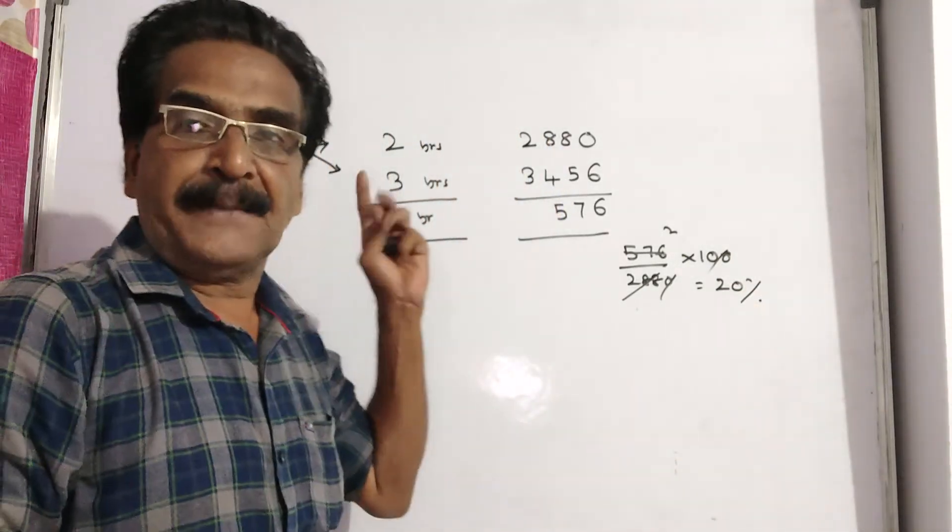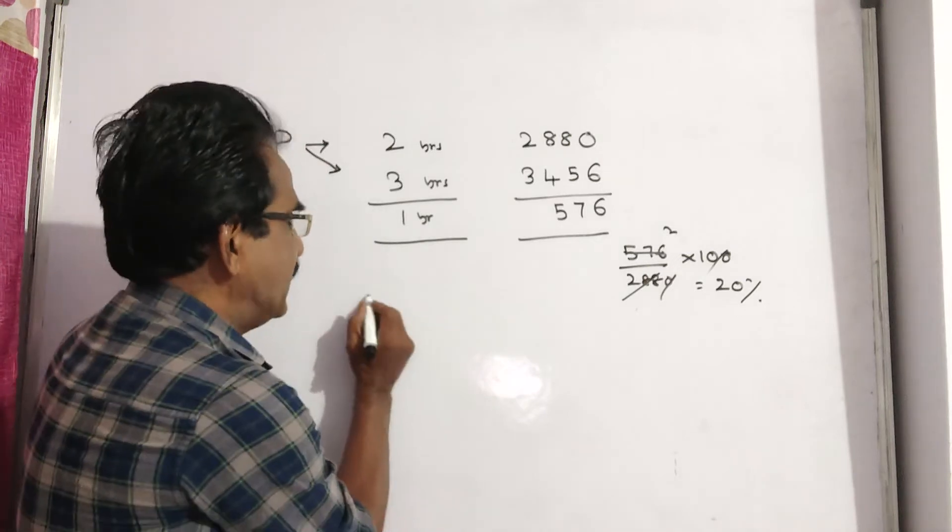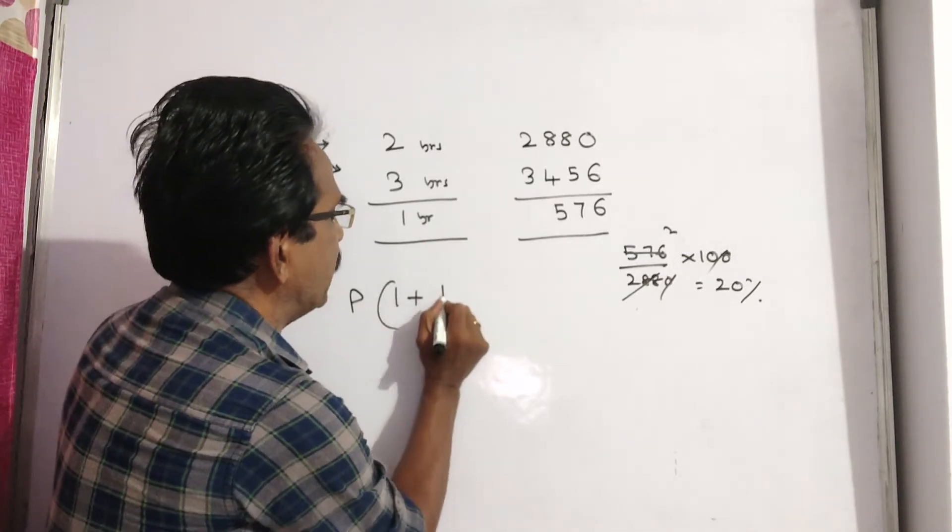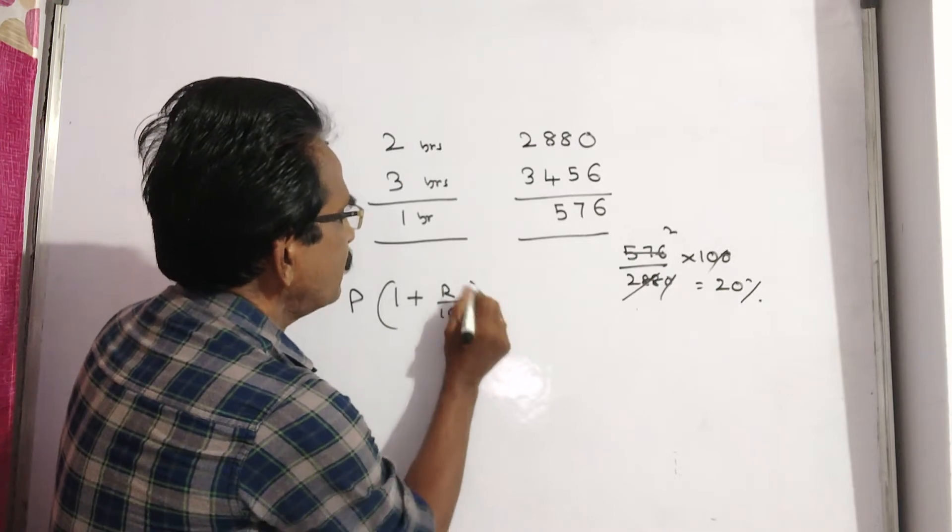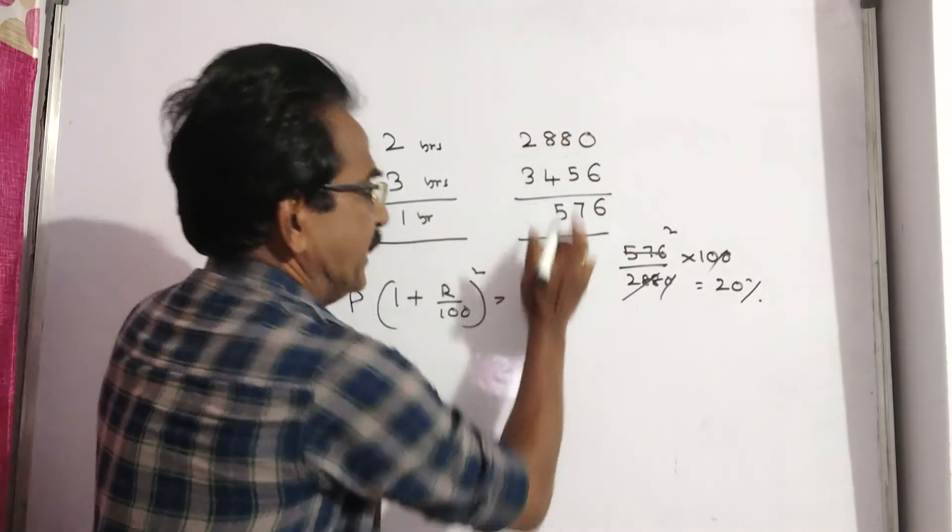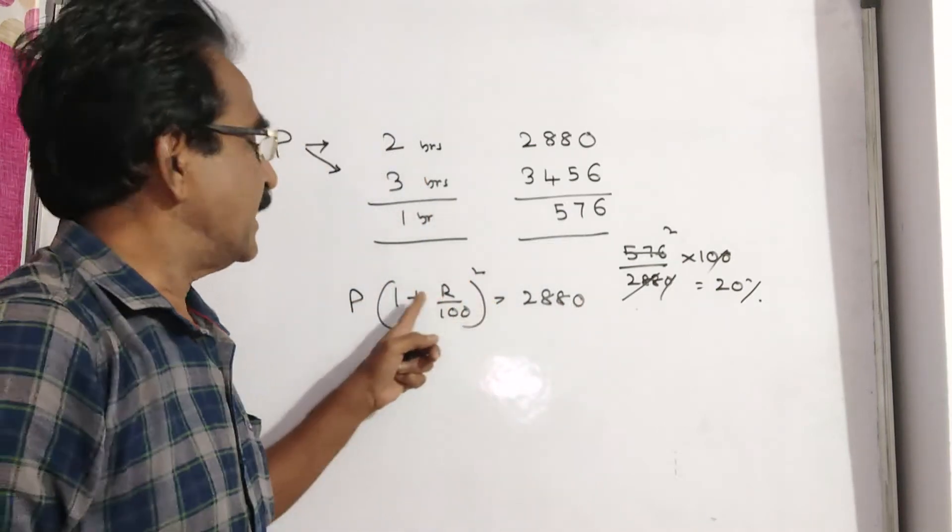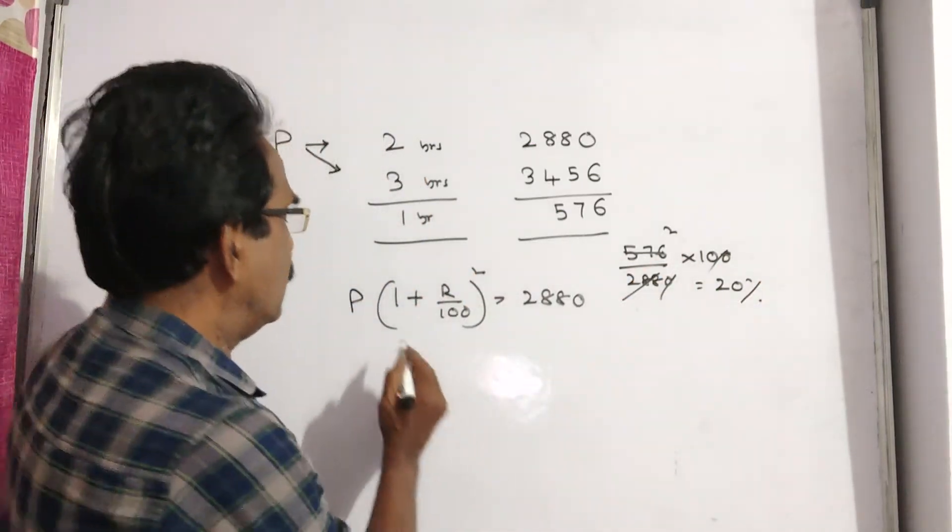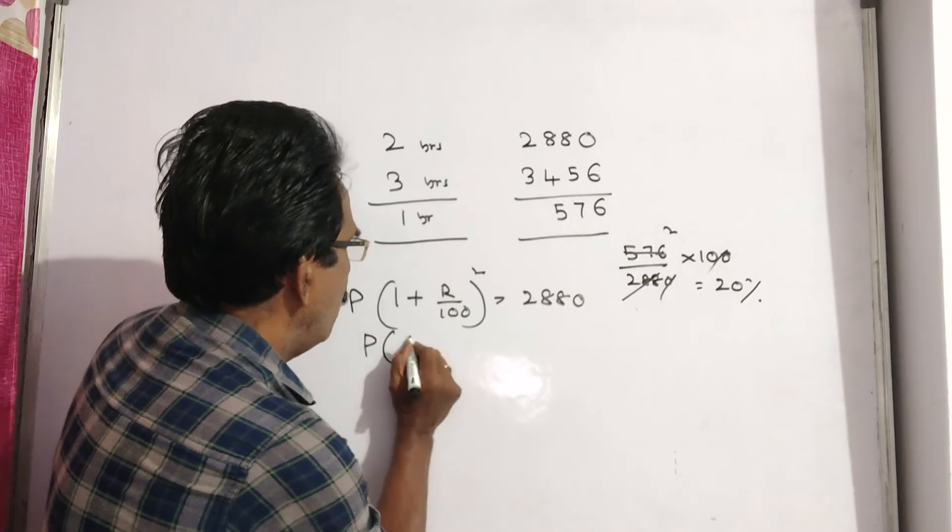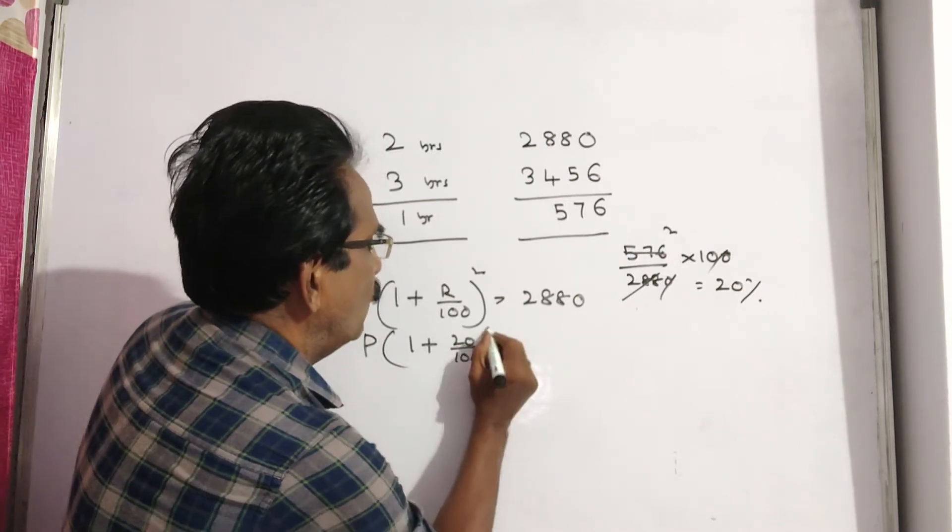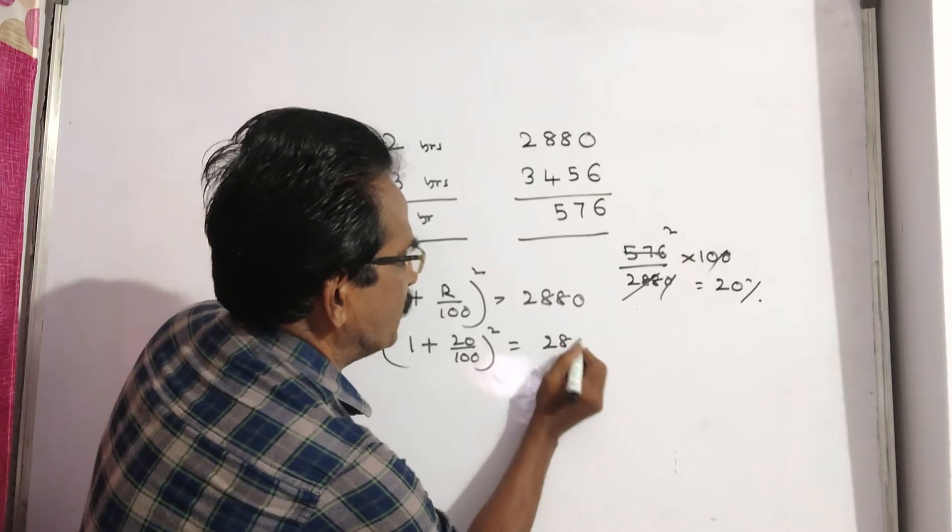Now, let us find P. See friends, this P becomes 2880 in 2 years at 20% per annum. So, P into 1 plus 20 by 100 whole square is equal to 2880.